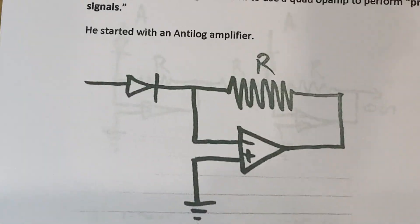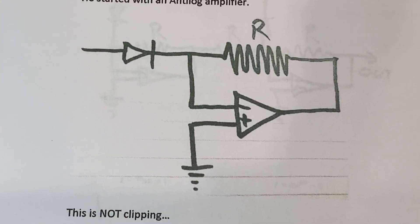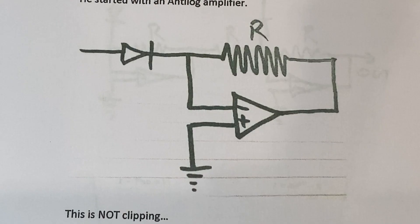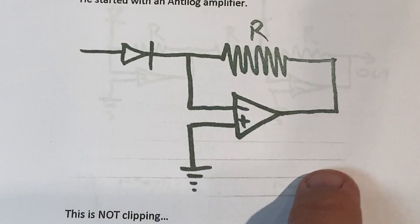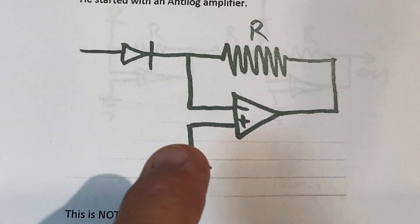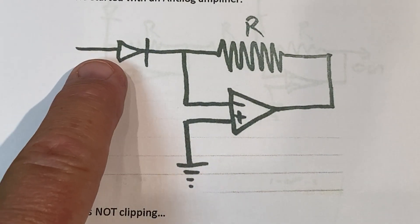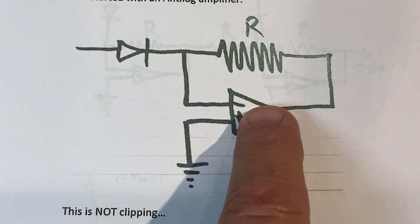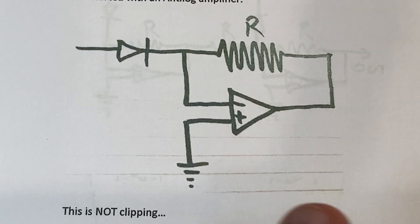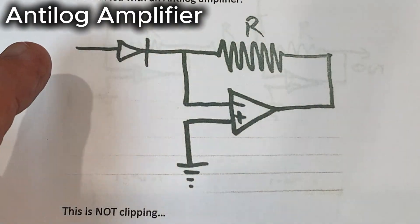All right, stepping through Sebastian's paper, he starts off by looking at this amplifier here. And at first thought, you might think that this is a diode doing some clipping and some amplification here. It's not a clipper. What this is, this is an anti-log amplifier.